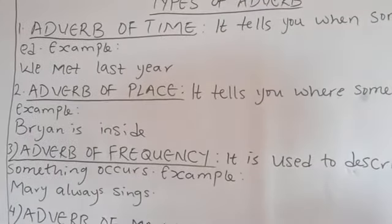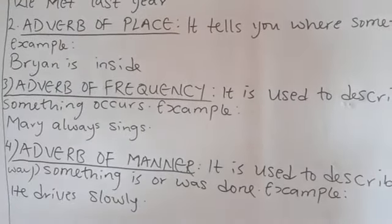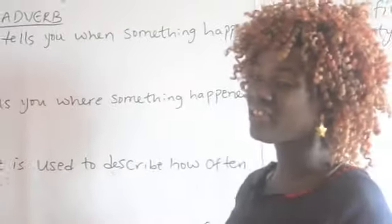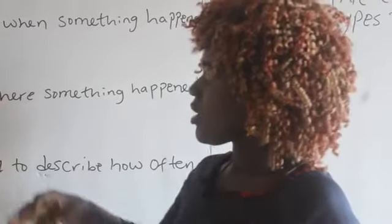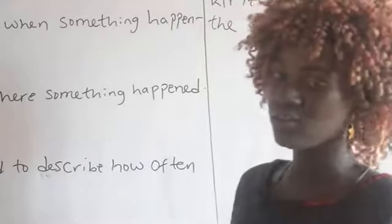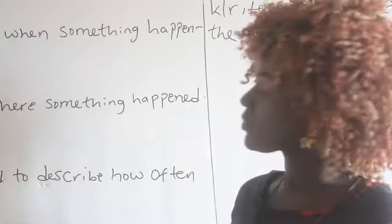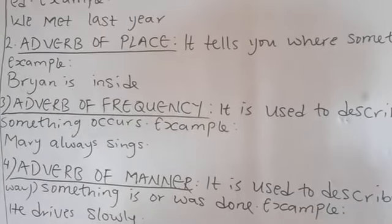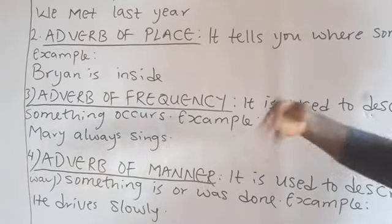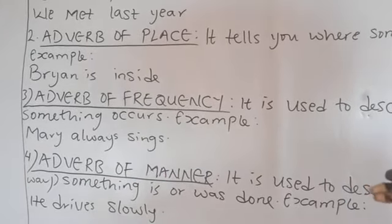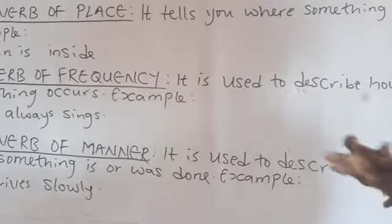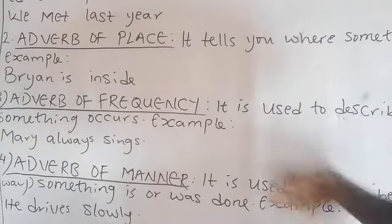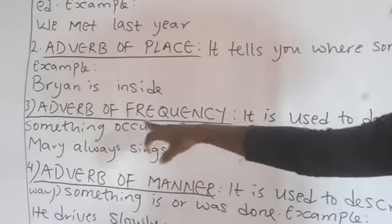And adverb of frequency — it is used to describe how often something occurs. For example: she always talks. 'Always' there is the adverb of frequency. She often eats. The adverb of frequency is used to describe how often something occurs. For example: Mary always sings. 'Always' there is the adverb of frequency.